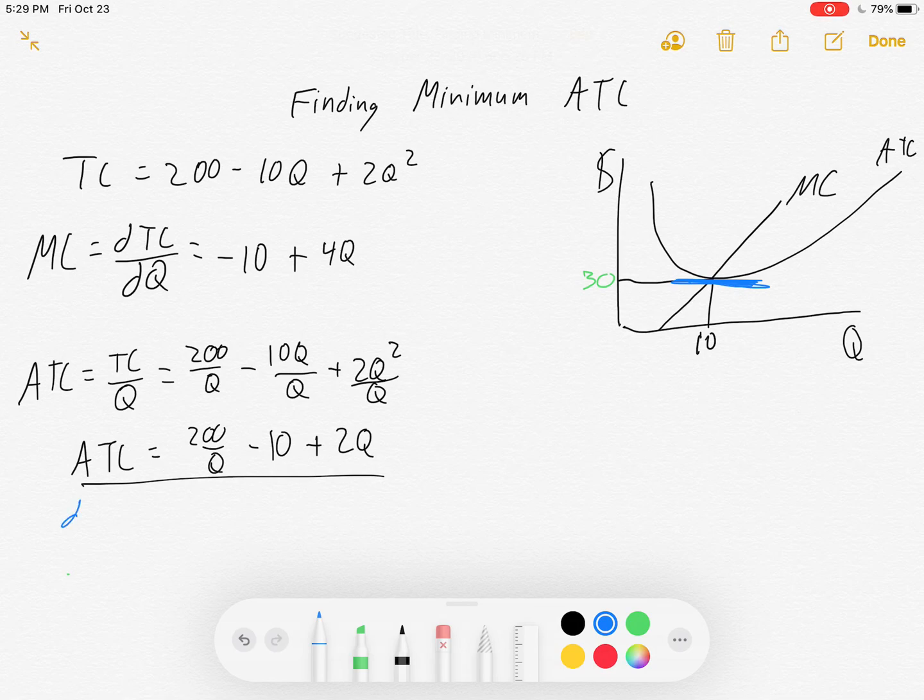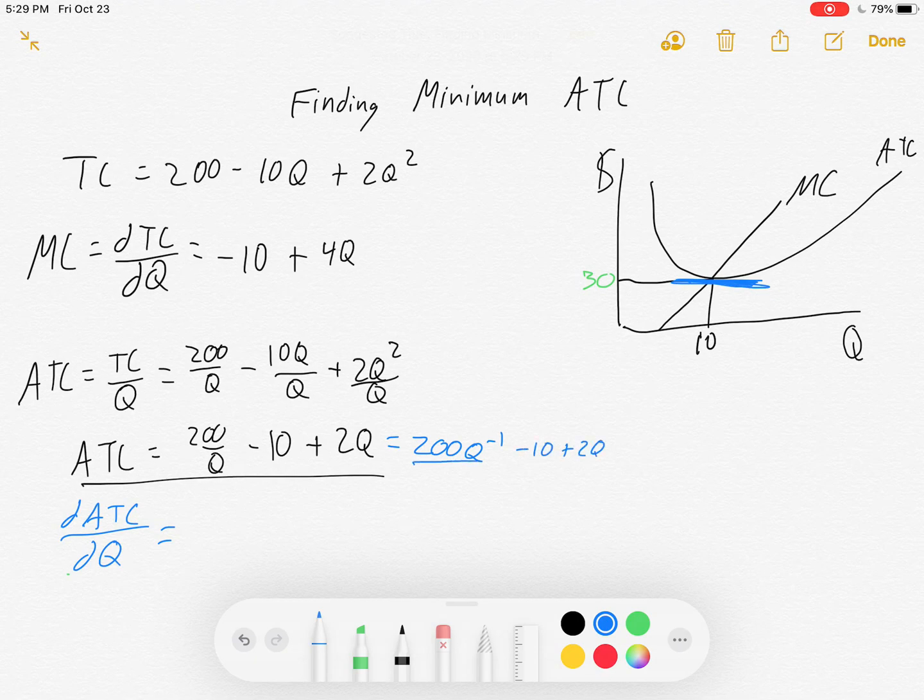So let's try it. And the derivative of the average total cost function with respect to Q is equal to, ooh, 200 over Q. Let me rewrite that real quick just to help you out. 200 over Q is the same thing as 200 Q to the negative 1 minus 10 plus 2Q. So this helps us because we can still use our power rule. 200 times Q to the minus 1, so let's see, minus 200 over Q squared. Minus 10 doesn't go anywhere. And then plus 2 equals 0.